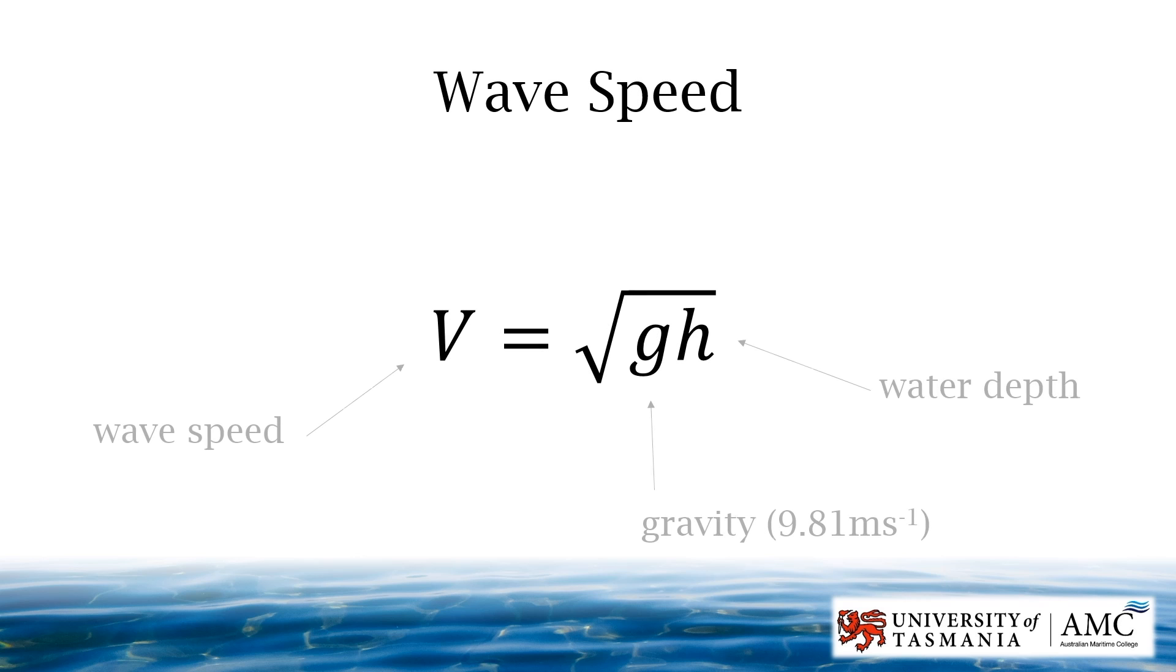The maximum speed of a wave is limited by the depth of the water it is traveling in. The deeper the water, the faster the wave can travel. This allows tsunamis to travel at very high speeds across deep oceans.